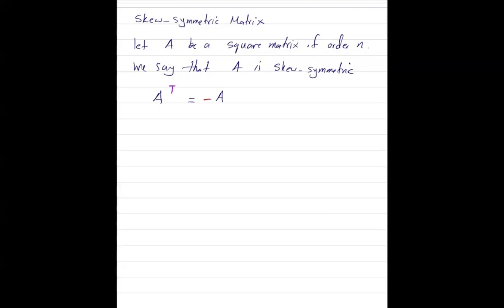We want to show that if we take the determinant of a skew-symmetric matrix, it is equal to negative 1 to the power n times the determinant of the matrix A.